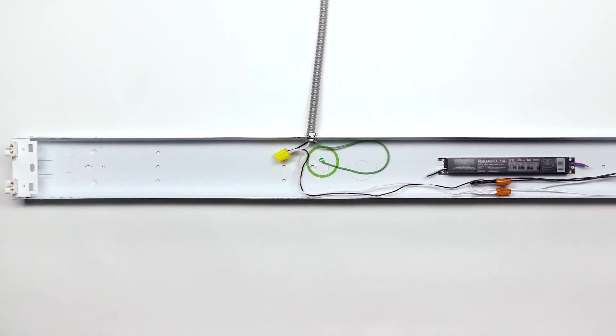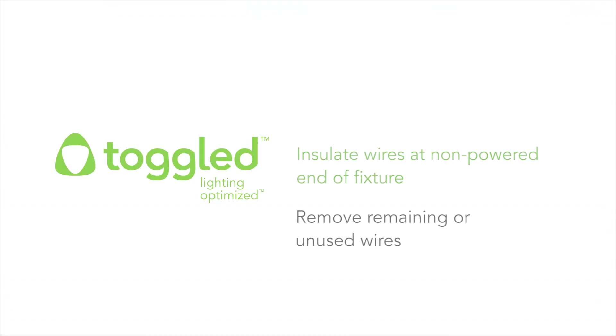Ensure that the fixture remains grounded. Insulate all wires at the non-powered end of the fixture or remove any remaining or unused wires.